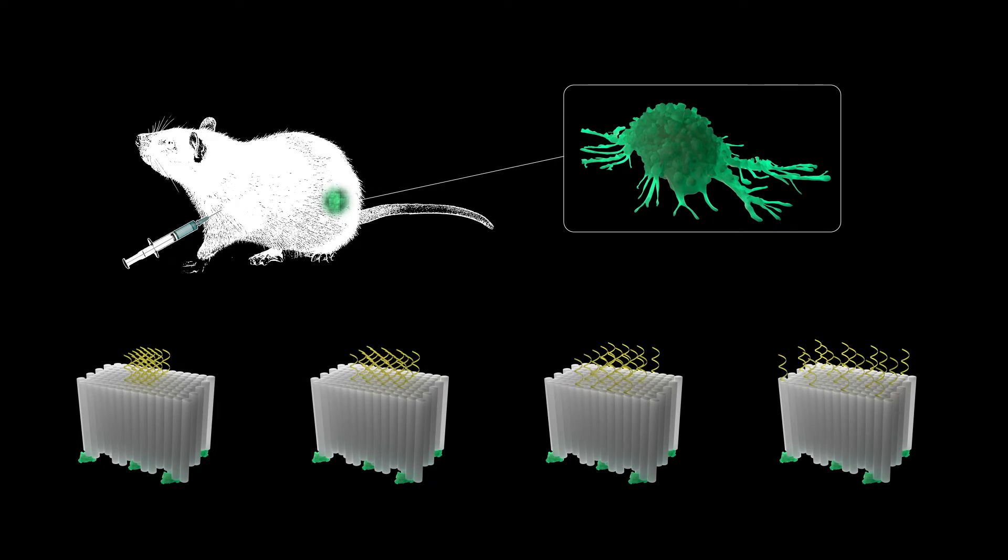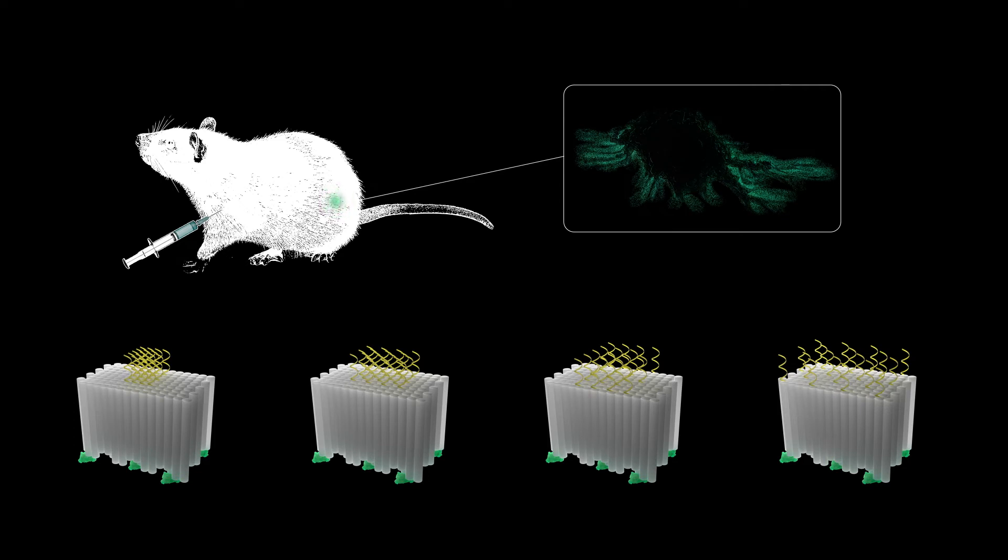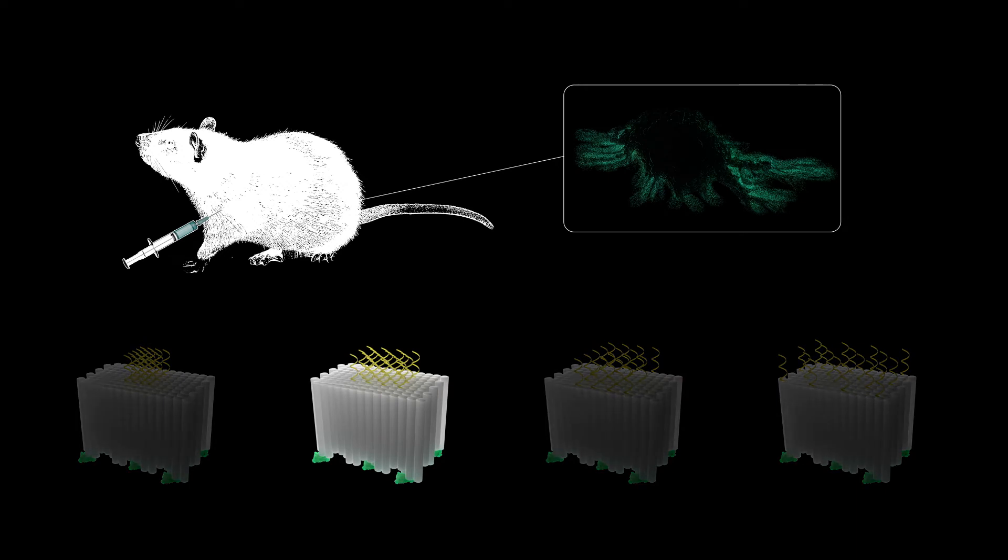In both models, the DNA origami vaccines successfully inhibited tumor growth and prolonged the overall survival of the animals. Again, the optimal CPG oligonucleotide spacing configuration, identified in the in vitro experiment, demonstrated the strongest immune-boosting therapeutic effects in mouse melanoma and lymphoma models.